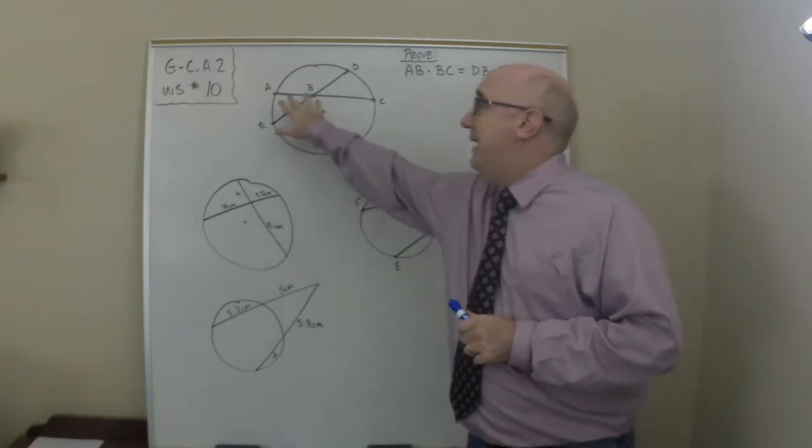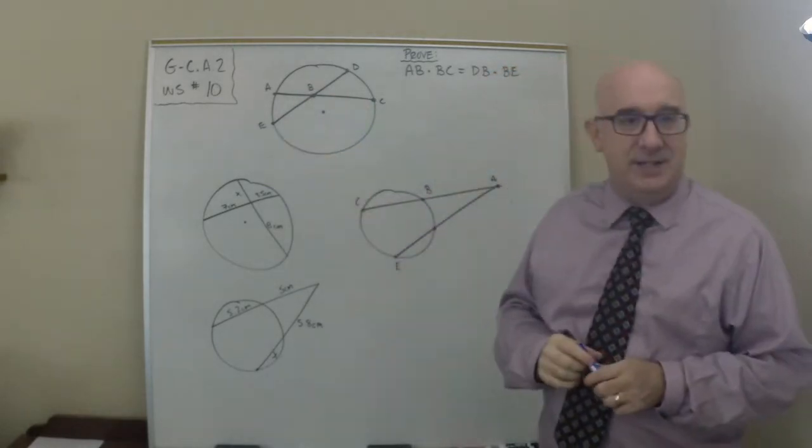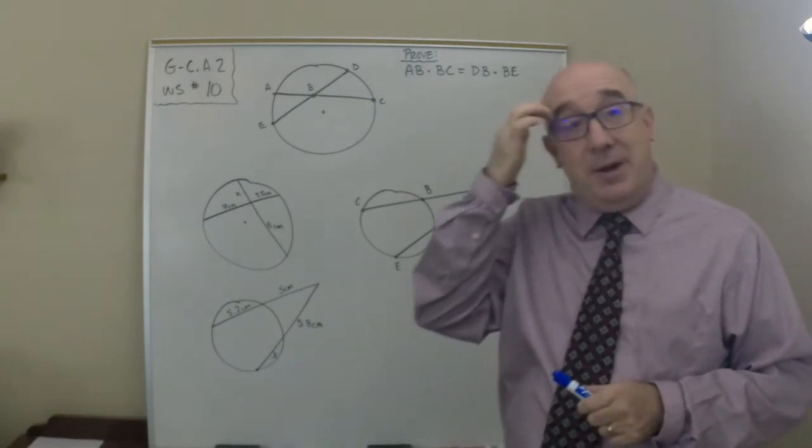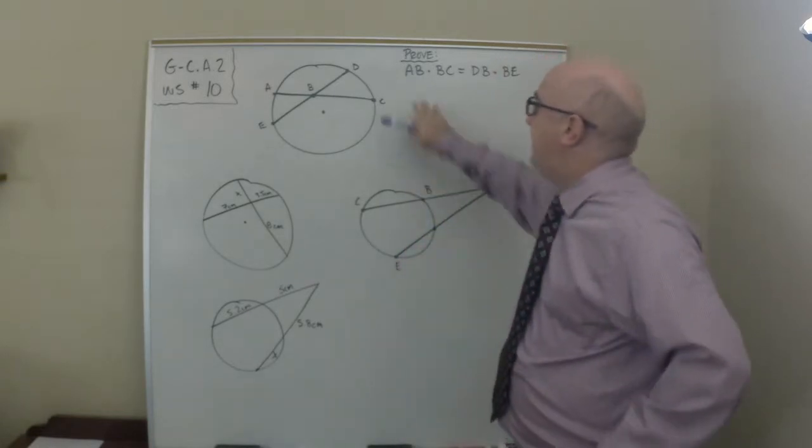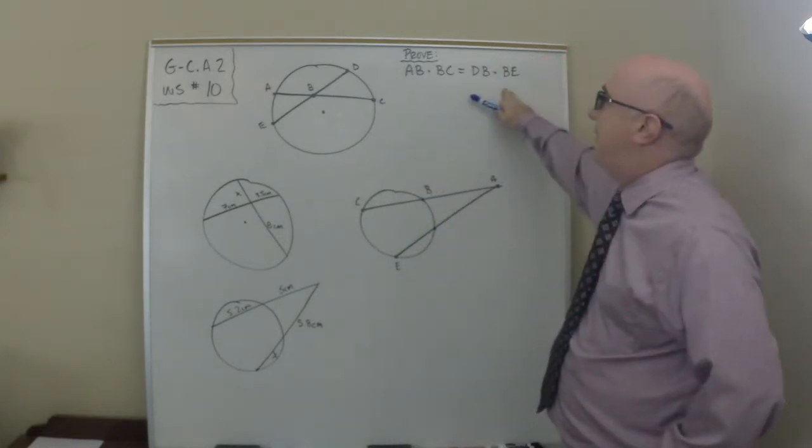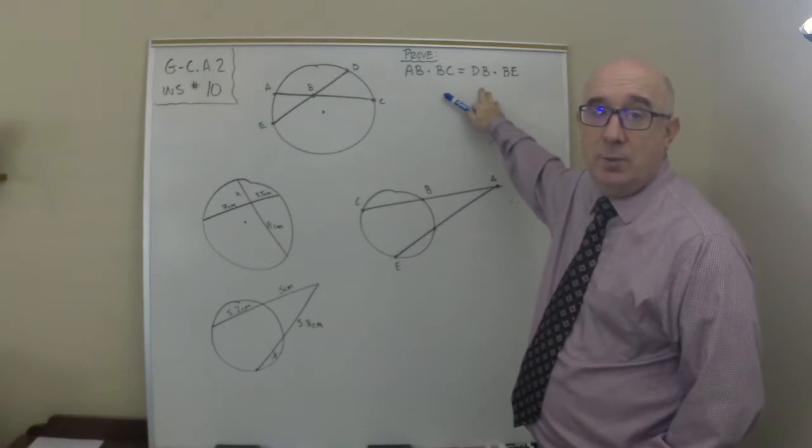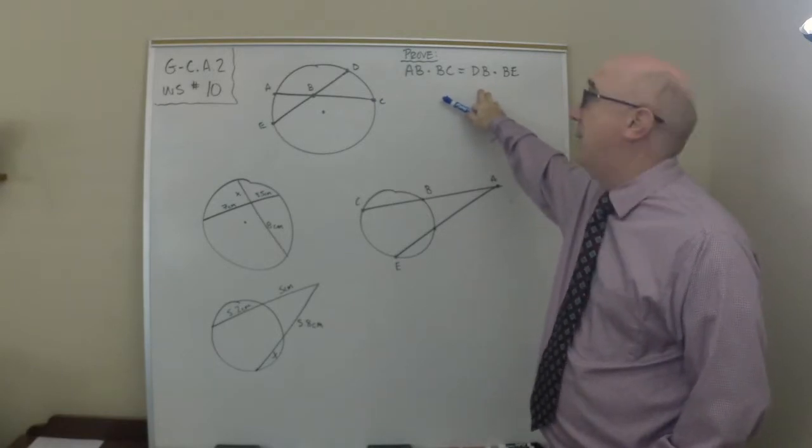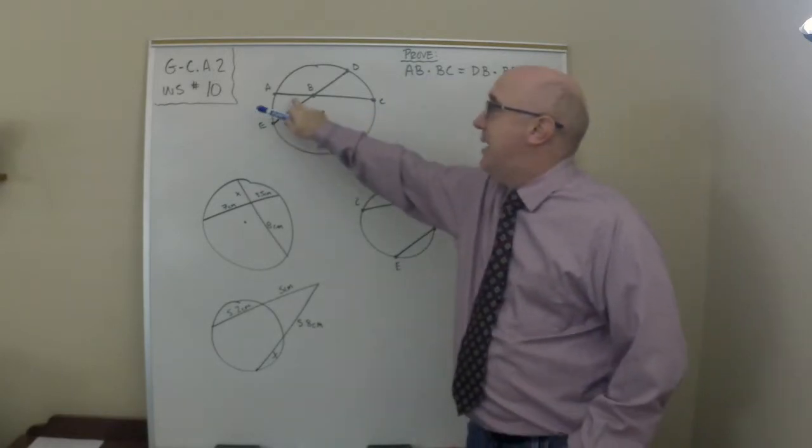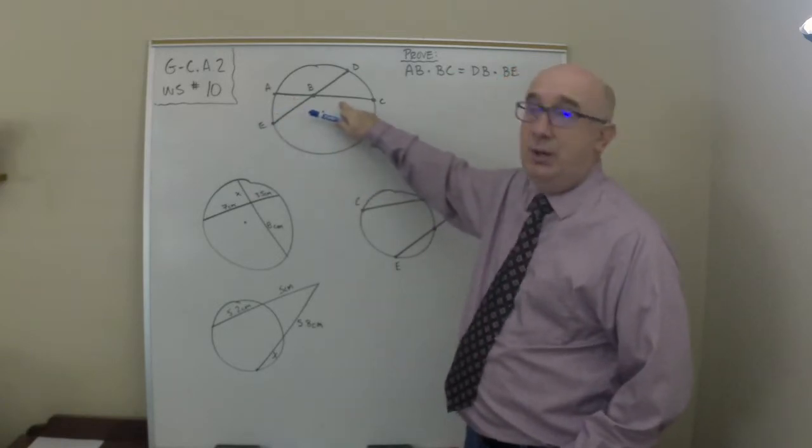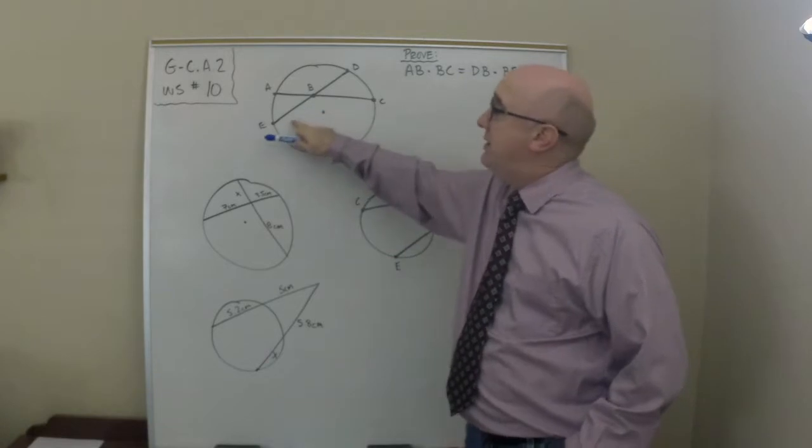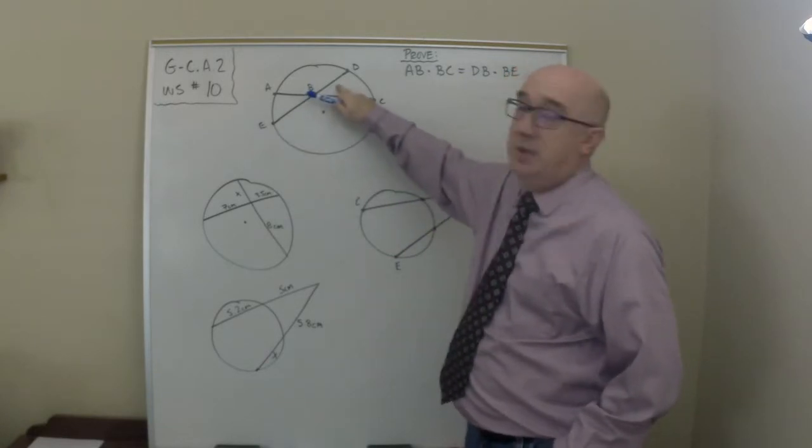I felt so guilty about not doing a proof the last video that I said I got to do one this time. So here's the main idea of what we're going to use in this particular worksheet. I want to show you where it comes from. It says that little length AB times the other part of the chord BC will always equal this chord piece times the other chord piece, no matter what.